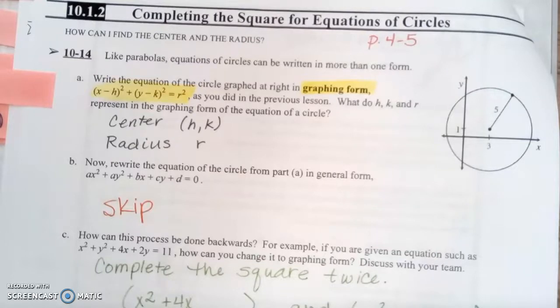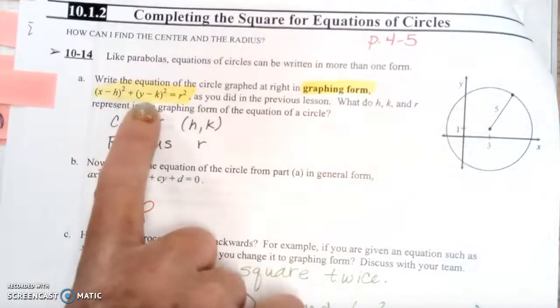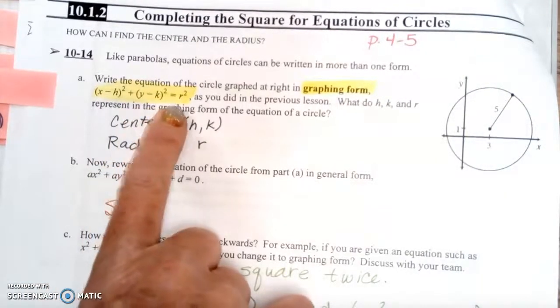Question 10-14 says, like parabolas, equations of circles can be written in more than one form. Write the equation of the circle in graphing form, which looks like the equation (x - h)² + (y - k)² = r², as you did in the previous lesson.